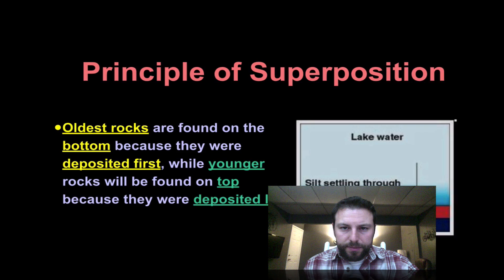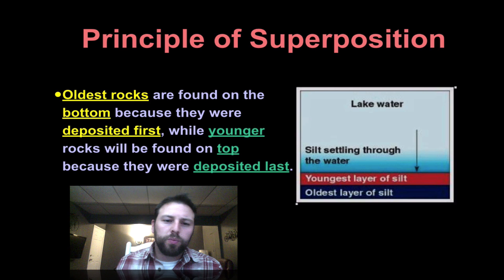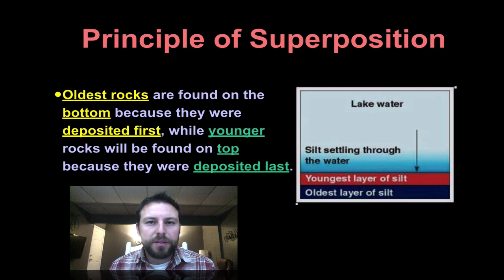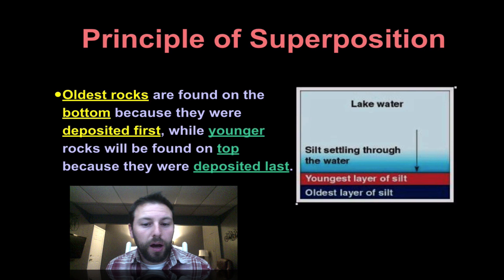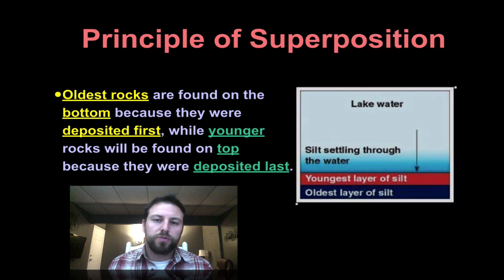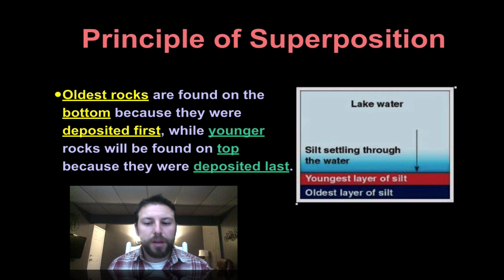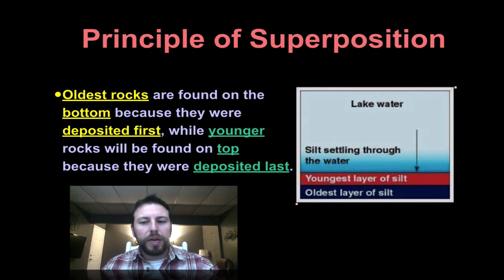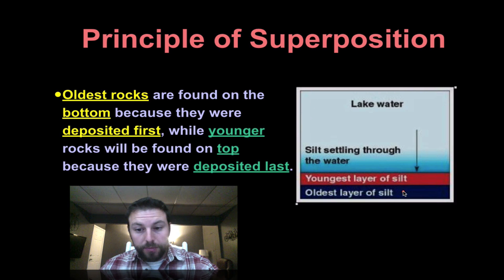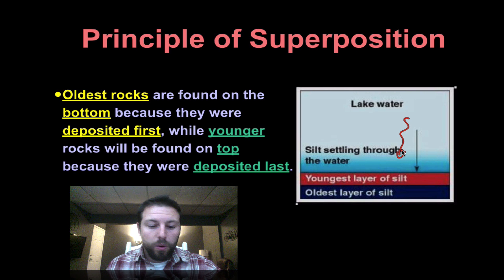Rock layers are similar to tree rings. A few things we need to know: first, the principle of superposition. This tells us that the oldest rocks are found on the bottom, because that's where they were deposited first. As rocks keep piling up, the younger ones end up on top. The principle of superposition: oldest rocks on the bottom. Remember, we're talking about deposition of sedimentary rocks — oldest layer of silt would become siltstone — and this all deposits in water.